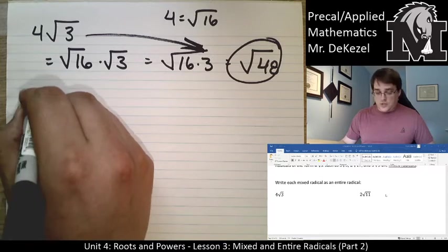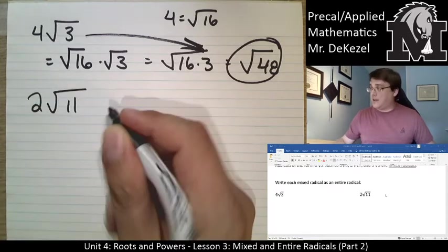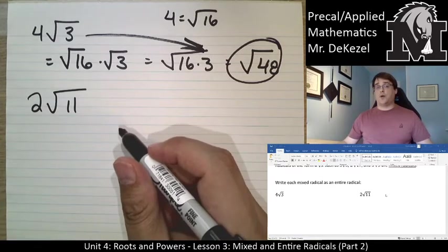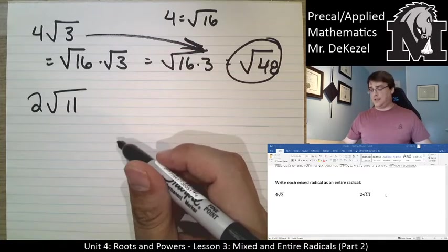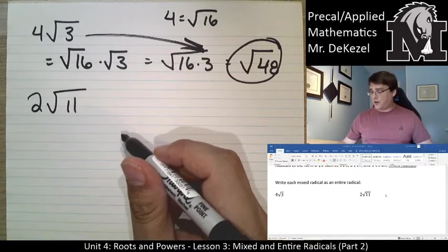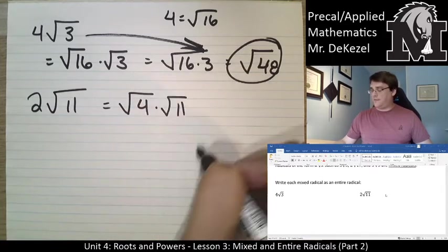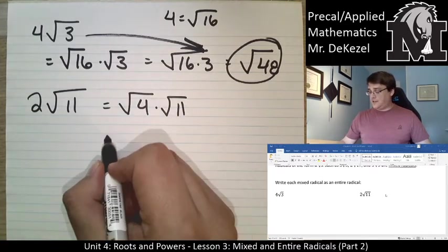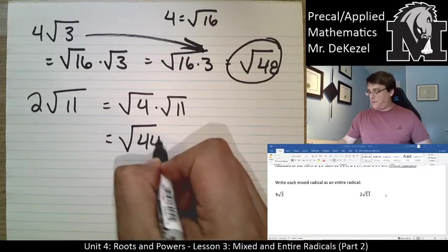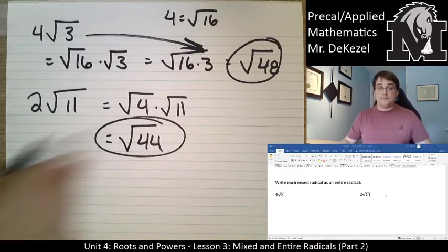Let's do 2 roots of 11. What number would I need to square root to get 2? To me, that's pretty obvious really quick. It's 4. So this would be equal to the root of 4 times the root of 11. The root of 4 times the root of 11 is equal to the root of 44. There's your value.